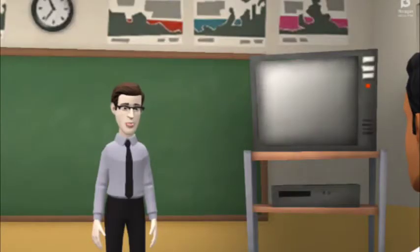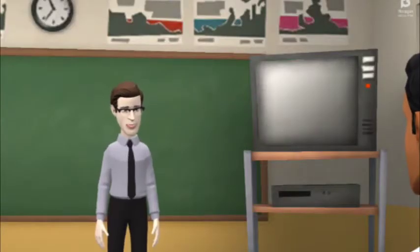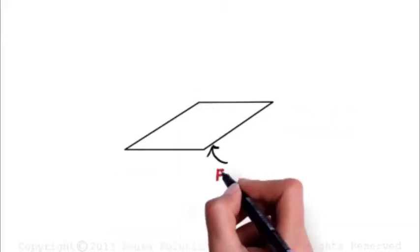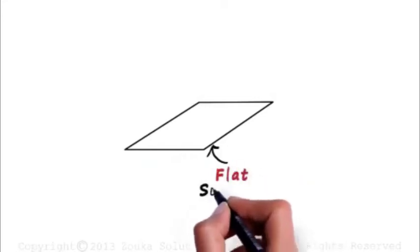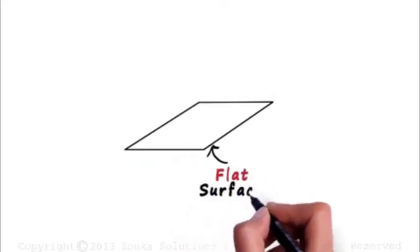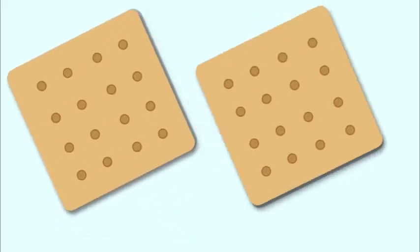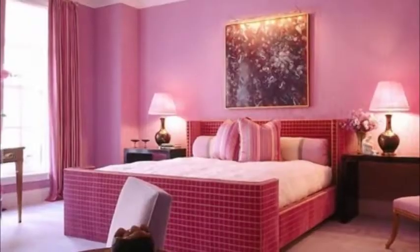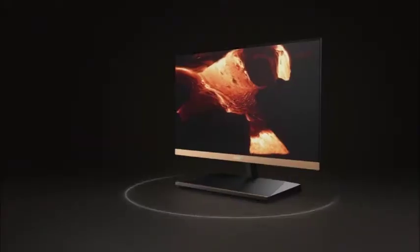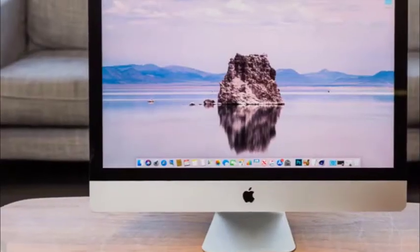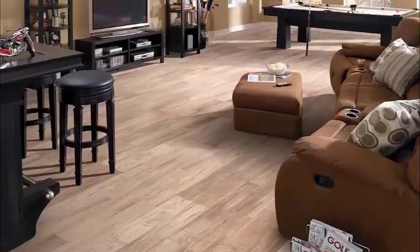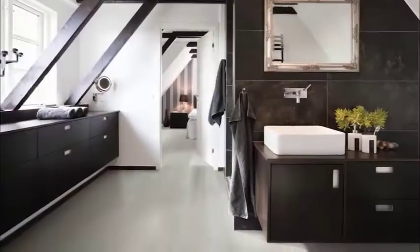Let's start with asking: what is a plane? A plane is a flat surface with no thickness. It is a two-dimensional surface that can have infinite length and width. Walls, countertops, book covers, and floors are some examples of planes.